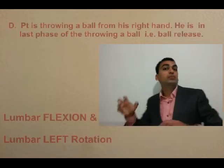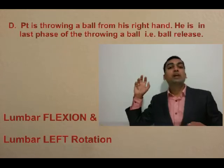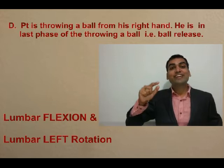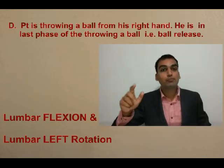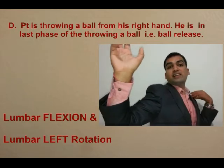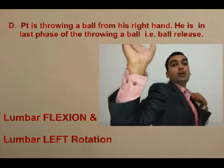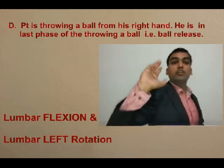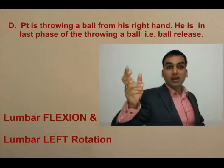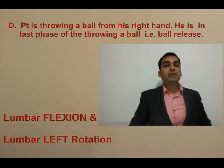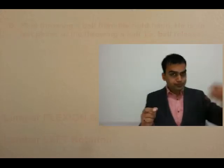The last activity is a throwing activity — throwing a ball with the right hand at the release phase. At this point your right shoulder is in front and your left shoulder is behind, meaning you are doing a left-side rotation of the lumbar. You are also leaning forward, meaning there is flexion of the lumbar as well.